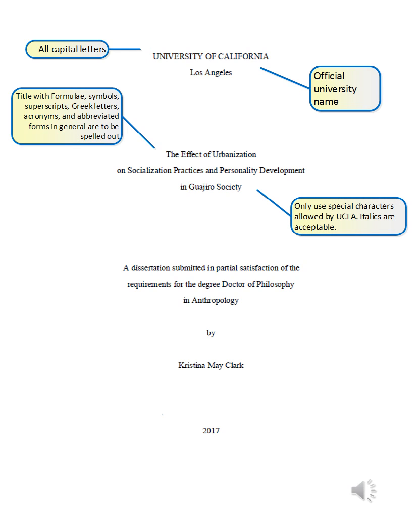Your manuscript will always begin with the title page. The official university name appears at the top of the page with University of California capitalized and Los Angeles underneath. Please note all pages must be double spaced and there is no bolding on the preliminary pages. Your title will appear underneath the university name. Everything must be spelled out including formulae, symbols, abbreviations, etc. You may only use special characters allowed by UCLA such as italics.